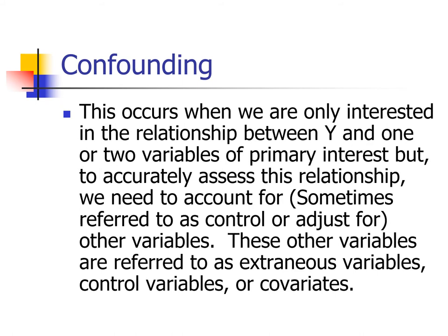So what is confounding? Confounding occurs when we are only interested in the relationship between Y and one or maybe two variables of primary interest, but it turns out that to accurately assess this relationship we need to account for — sometimes referred to as control for or adjust for — other variables. These other variables might be referred to as extraneous variables, control variables, or very often as covariates.